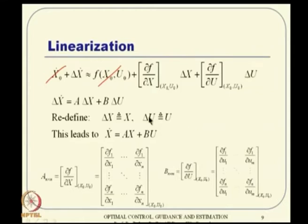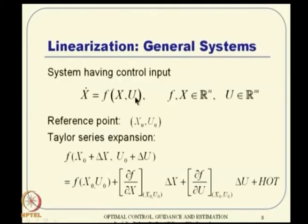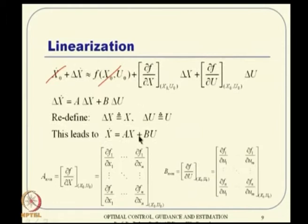If x0, u0 happens to be the zero vector, then delta-x equals x and delta-u equals u directly. The A and B matrices are defined in terms of Jacobian matrices, evaluated at the operating point x0, u0. A happens to be an n-by-n square matrix and B will be an n-by-m non-square matrix in general.